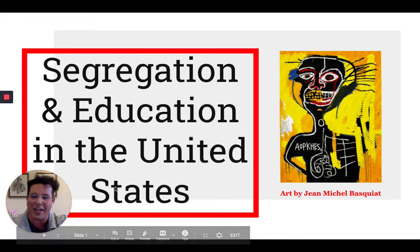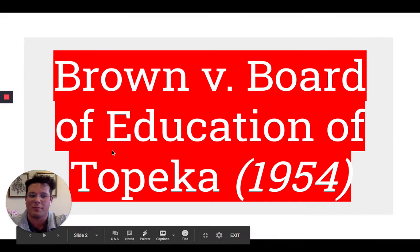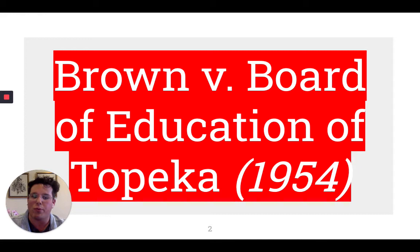Segregation and education in the United States. Brown versus Board of Education of Topeka is a U.S. Supreme Court decision that changed the landscape of legal support for segregation, especially racial segregation in public education. It was a paradigm shift. It overturned Plessy versus Ferguson of 1896 in the area of public education.